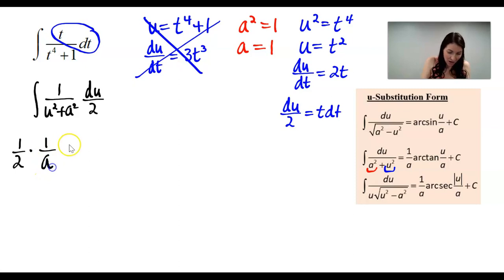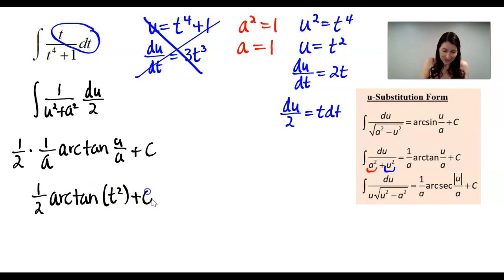When I integrate, I would get 1 over a times arc tangent of u over a, and of course, don't forget our constant. Now I can replace the u and the a with the values that I indicated over here to the right. So I would have 1 half times 1 over a, which is 1 half, times arc tangent of u over a, which would be t squared over 1, or t squared, and then plus c. And that is going to be the answer to this integral.